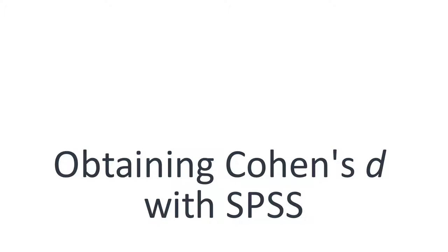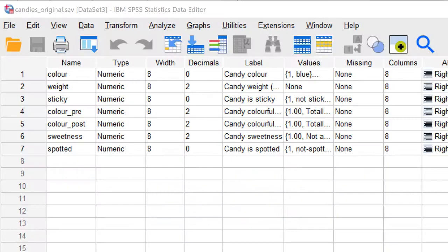Obtaining Cohen's d with SPSS. SPSS version 27 and later calculates Cohen's d for t-tests on one or two means. Let us see how this works for a one-sample t-test on average candy weight.